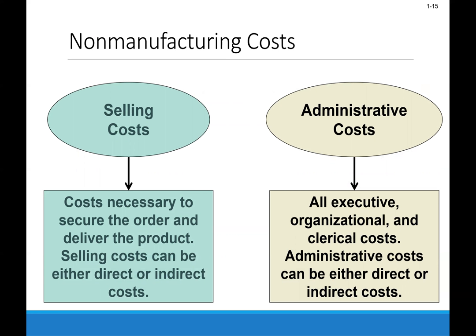There are non-manufacturing costs within a manufacturing company. Selling costs and administrative costs we consider non-manufacturing — they do not go into producing the product. Selling costs are important and needed to secure the order and to deliver the products; they can be direct or indirect, but do not go into the manufacturing costs. Administrative costs relate to all of the executive, organizational, and clerical costs — again, those can be direct or indirect, but both categories are not related to manufacturing.